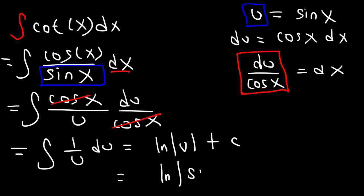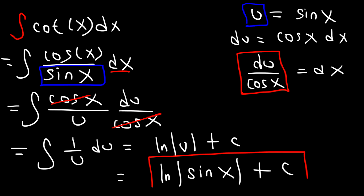So this is going to be ln|sin(x)| + C. We don't have a negative sign in front, so we don't need to modify this expression. This is the integral of the cotangent function: the natural log of sine x plus C. And that's it.